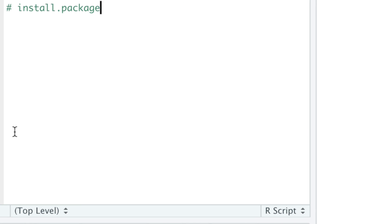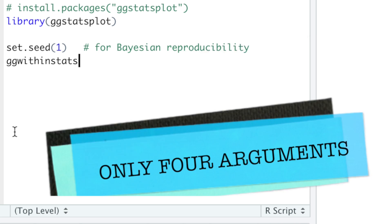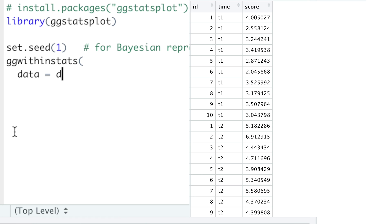And the best way to compute repeated measures ANOVA, in my opinion, is the ggwithinstats function from ggstatsplot package, which needs only four arguments. First, our data, which is d,